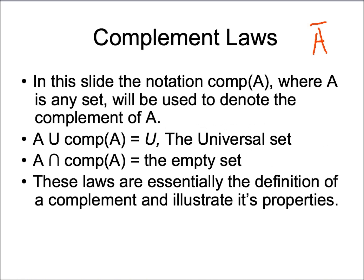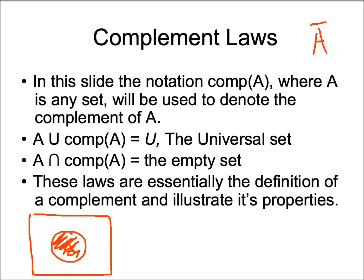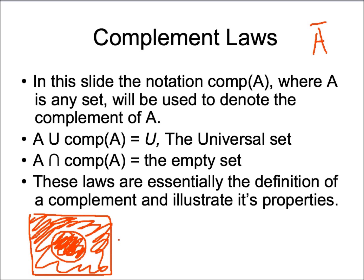Lastly, we have the complement laws. To show this graphically, the first complement law states that the union of A and its complement will equal the universal set. We have set A and then the complement, which is everything but A. The union of A and the complement of A gives us everything, which is equivalent to the universal set.